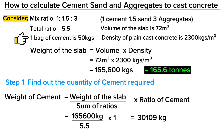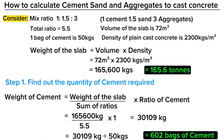One bag of cement is equal to 50 kilograms. Therefore, when you divide the weight of cement in the whole mixture by the weight of one bag of cement, you get 602 bags of cement required.